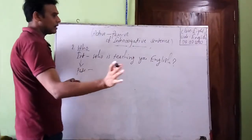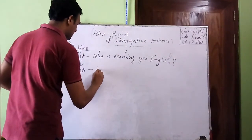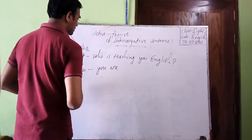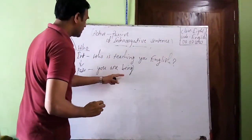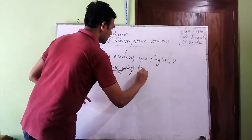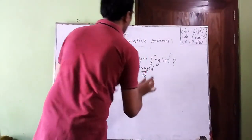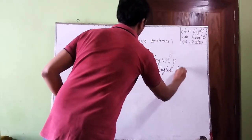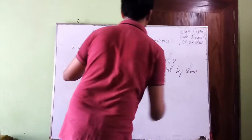The passive form will be: we have two objects here, so we bring the first object as the subject of our passive sentence, which is 'You.' Then we have the auxiliary verb — we take 'are' according to the subject. Then a 'be' comes here and we add 'ing' to that 'be' verb. So: 'You are being taught.' Then the second object 'English' comes, and then 'by whom' — the objective form of 'who' is 'whom.'